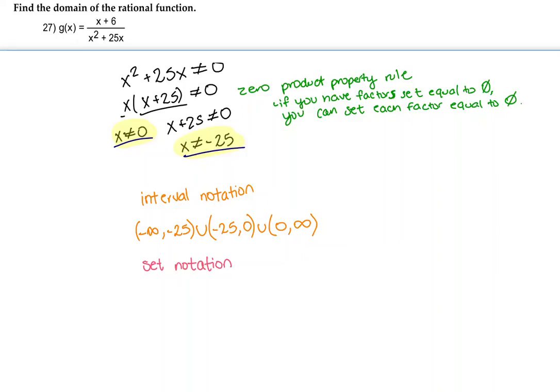Now for set notation, set notation is written a little bit differently. It's read as, for all x, x cannot equal, and then you have the impossibilities, starting from the lowest to the highest number. So for all x, x cannot equal negative 25 and 0. And then sometimes there are little squiggly lines. But make sure if he or she writes in set notation, make sure you do that. And the same thing goes for interval notation. Cool.